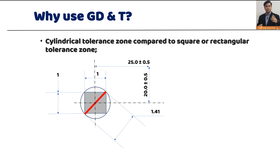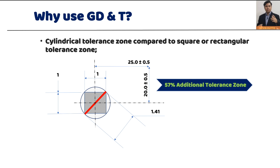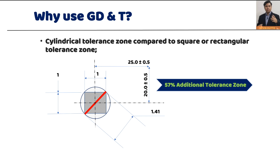Instead of a rectangular tolerance zone, GD&T provides a position tolerance with a cylindrical tolerance zone. The advantage is that we get 57 percent additional tolerance zone. Parts that fall in that extra area are all accepted — meaning many functional parts that would have been rejected in the previous system are now accepted, and the cost of production comes down drastically.